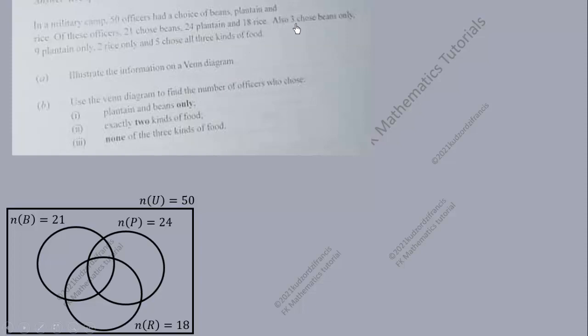We are also told that 3 chose beans only, 9 chose plantain only, and 2 chose rice only. Then 5 chose all 3 kinds of food, placed in the central overlapping region of the Venn diagram.